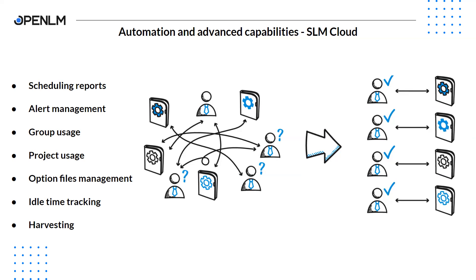We have a tool called Option File Management, which can help you manage your option files from the SLM interface without accessing your license server and editing files manually. We are also able to track idle time for applications — this feature also requires the Workstation Agent. The Workstation Agent reports to SLM and you can see if the application was actively used or just running in the background. This way, you will get actual usage — the time when the engineering software was actively used.